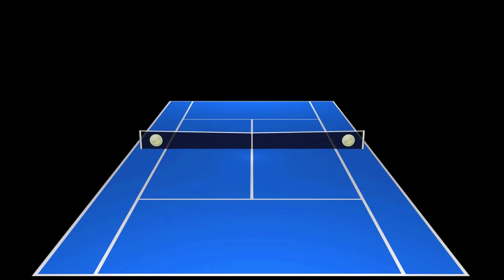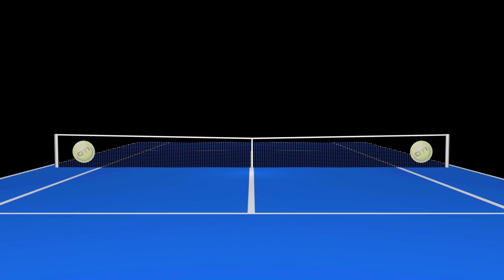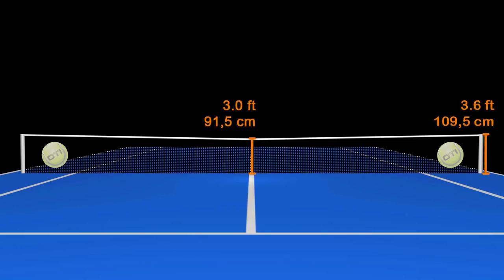The last reason why hitting cross court is usually safer is that the net is higher when you hit down the line. Players already have a tendency to miss in the net too much, so the chances of missing in the net increase a lot going down the line. The net is roughly 3 feet when you go cross court and 3.6 feet when you go down the line.